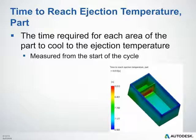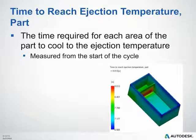The final result from a cooling analysis is the time to reach ejection temperature. This is the time required for each area of the part to cool down to the specified ejection temperature, measured from the start of the cycle. When reviewing this plot, look for uniformity across the part. Non-uniformity is typically due to inconsistent wall thicknesses or a suboptimal waterline layout. Corrections include thinning thicker areas, adding additional waterlines in difficult-to-cool regions, or changing waterline position.